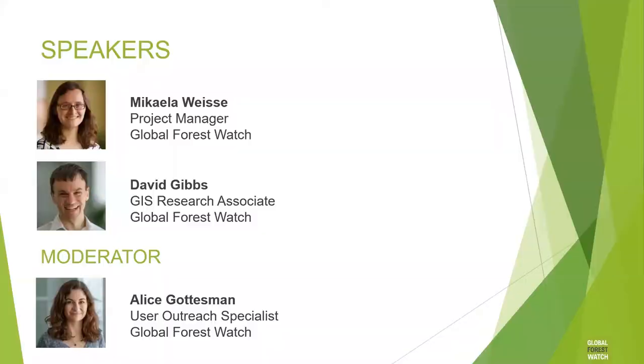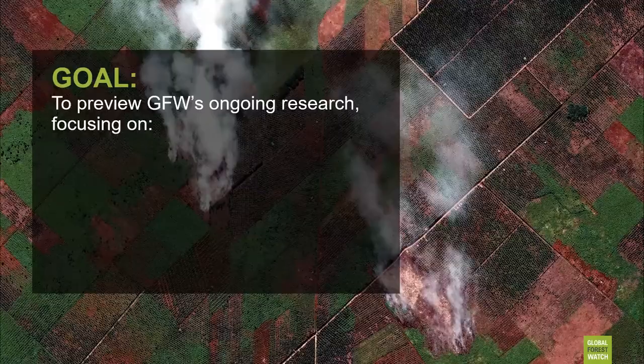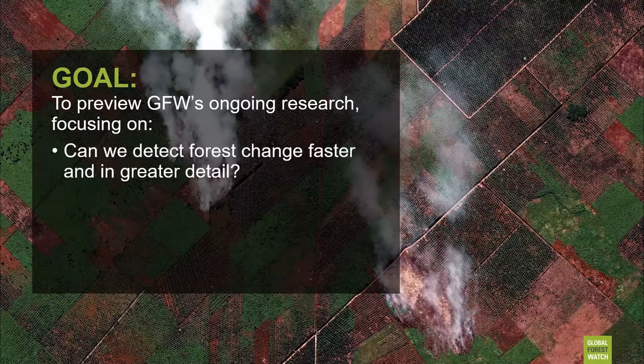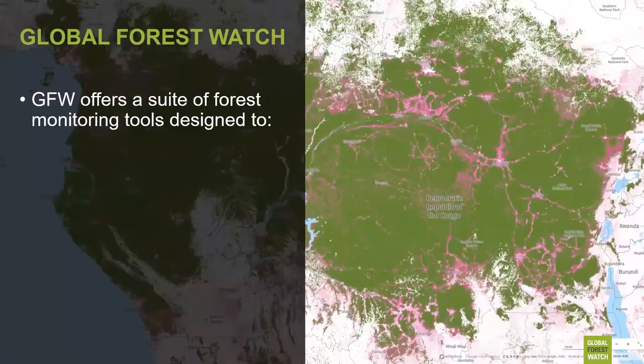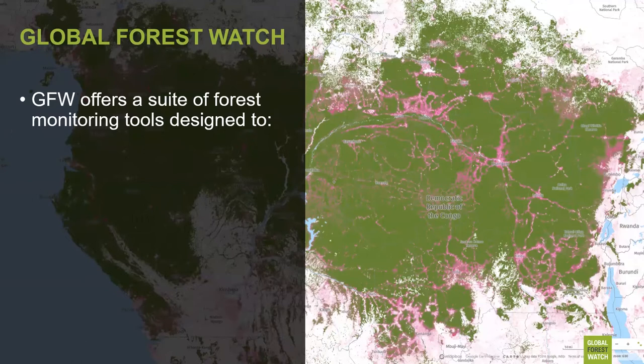The goal of today's webinar is to provide a preview of ongoing research focused on three core questions: Can we detect forest change faster and in greater detail? Can we improve our understanding of what causes forest loss? And can we map how much carbon forests are emitting and sequestering? Global Forest Watch offers an integrated, openly accessible suite of tools designed to enable experts and non-experts alike to access information about forest change and mobilize action.